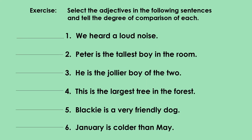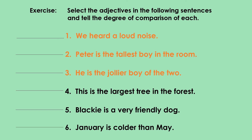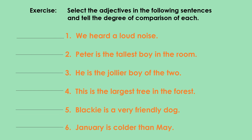Number one: We heard a loud noise. Number two: Peter is the tallest boy in the room. Number three: He is the jollier boy of the two. Number four: This is the largest tree in the forest. Number five: Blackie is a very friendly dog. Number six: January is colder than May. Write your answers now. You may pause this video if you need more time.